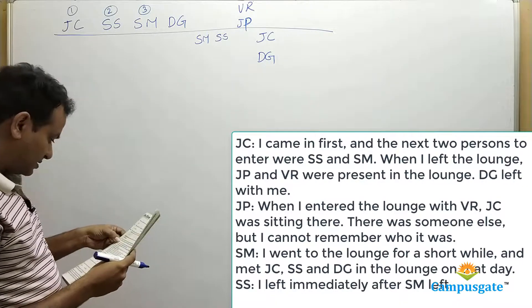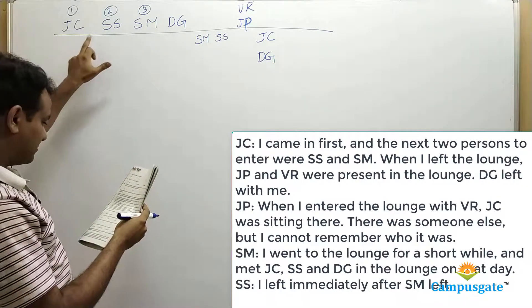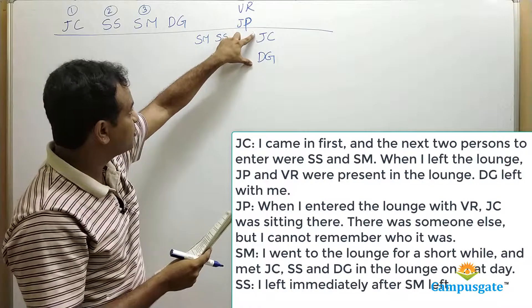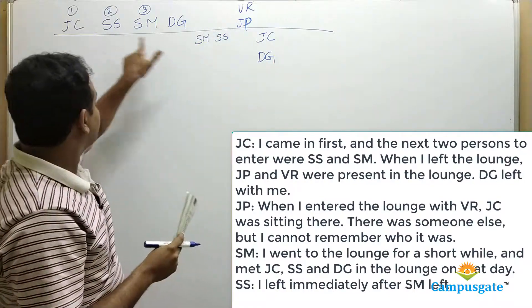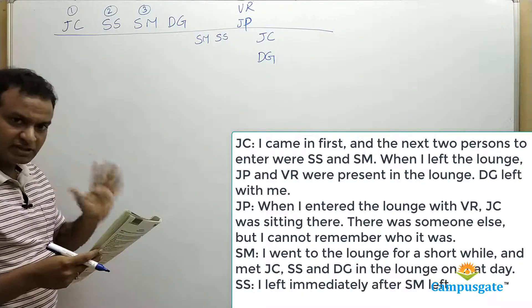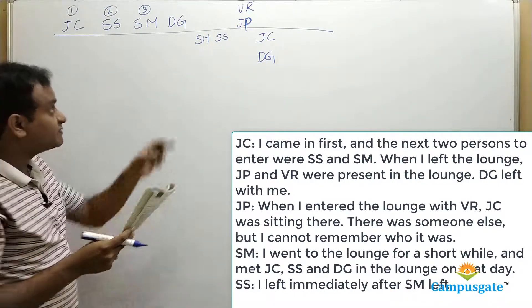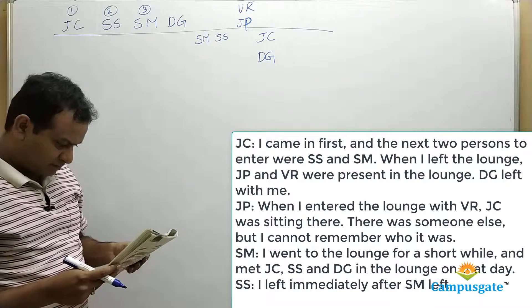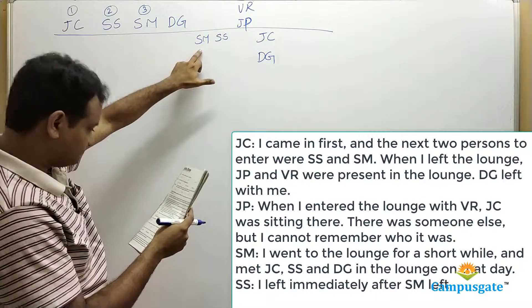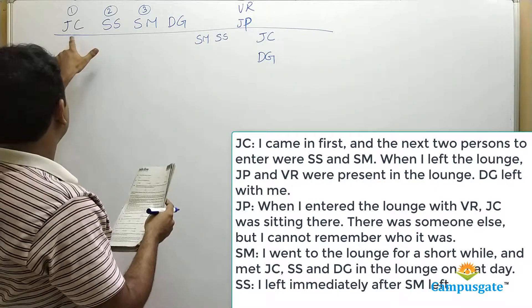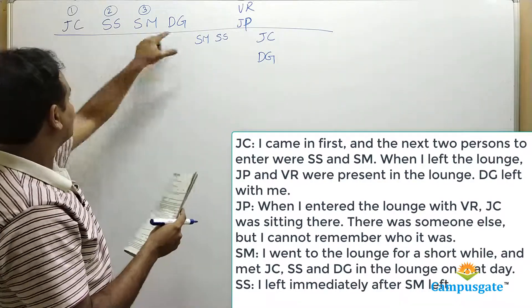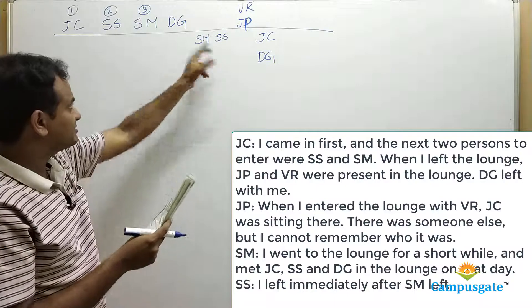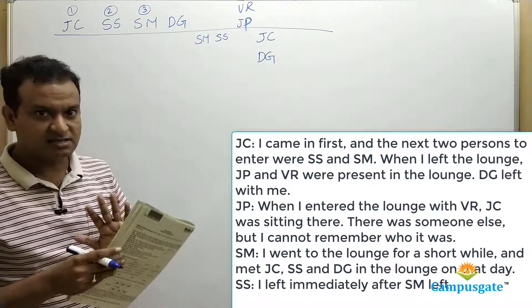Let us check for consistency. First clue: JC came in first, SS and SM were next. When JC left, JP and VR were present, and SM and SS had already left — consistent. Second clue: when JP and VR entered, JC was sitting there, and SM and SS had already left — consistent. Third clue: SM met JC, SS and DG, meaning SM left after DG arrived, and SS immediately left after SM — consistent. This diagram is very much consistent.